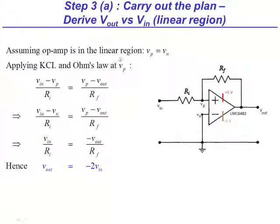Since the op-amp is in the linear region, we know Vp equals Vn. Applying Kirchhoff's current law and Ohm's law, we get the current through Ri equals the current through Rf. Since the current going into the non-inverting terminal is zero, I have used Ohm's law to write the two currents in terms of node voltages. Since Vn is connected to ground, we can simplify the expression and finally plug in Ri equals 10k, Rf equals 20k to get Vout equals negative 2 Vin.